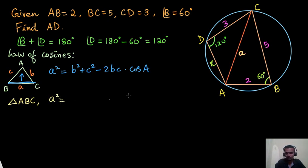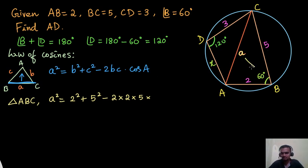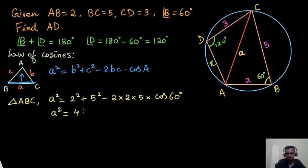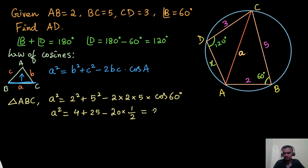I will apply the law of cosines to triangle ABC, starting with side a. So a² = AB² + BC² − 2·AB·BC·cos(B), which gives us 2² + 5² − 2·2·5·cos(60°). That is 4 + 25 − 20·cos(60°). Since cos 60° = ½, we get 4 + 25 − 20·(½) = 29 − 10 = 19. So a² = 19. I will keep it as a² and not take the square root, and you will know why later on.